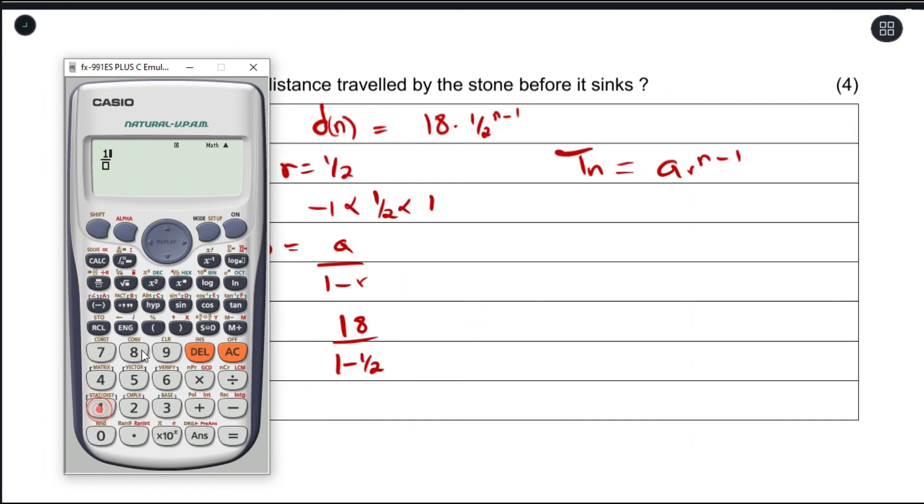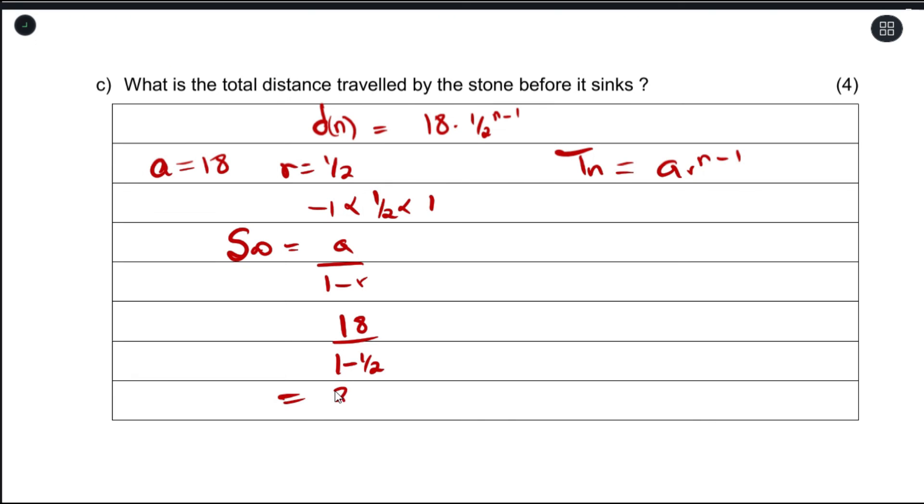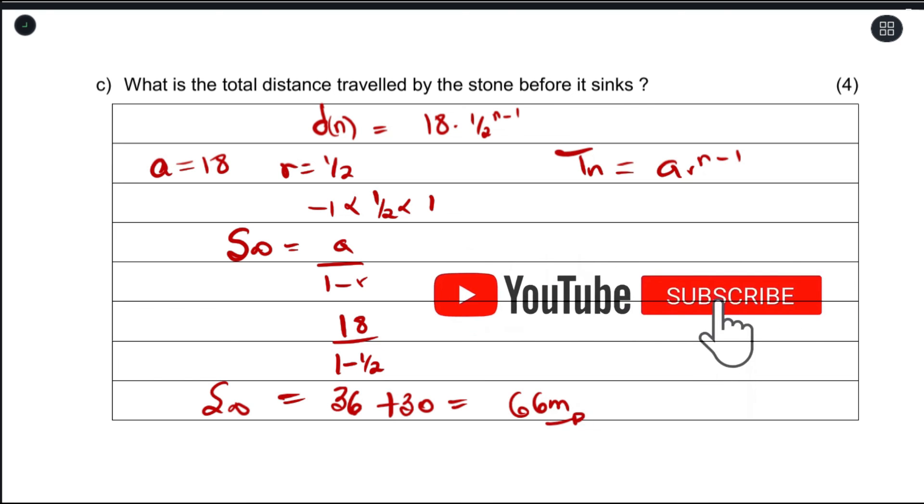Putting this in the calculator, 18 divided by 1 minus one-half, which is 36. So this is the total distance that our stone is going to move before it sinks after the first bounce. But from the original question, the stone first moved a distance of 30 meters before that first bounce, so we need to add that 30. The total distance it's going to travel before it sinks is 66 meters.